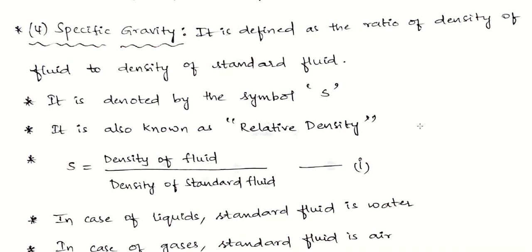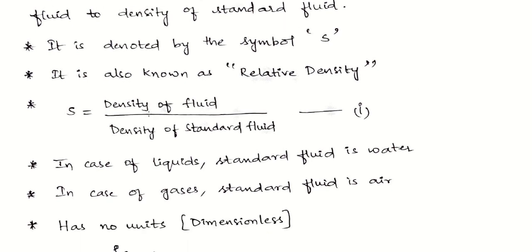Next comes the most important property: specific gravity. You will use this countless times, so be very confident. Specific gravity is the ratio of density of a fluid to the density of a standard fluid. For liquids the standard fluid is water; for gases the standard fluid is air. Since you are relating two densities, specific gravity is also known as relative density. It is denoted by capital S.